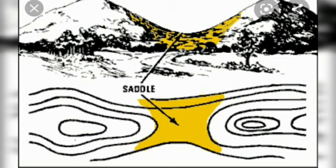In this slide you can see a certain space between one hill and another. This space is known as a saddle. If the space is less, it is known as a col; if it is slightly more, it is known as a gap.